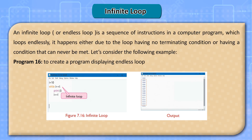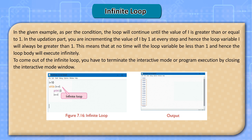Program 15: write a program to display no output when the test condition is false. In the above example, as the initial value of i (10) is greater than 1, the condition returns false, and hence the loop body will not be executed even once — so you get no output. Infinite loop: an infinite loop or endless loop is a sequence of instructions in a computer program which loops endlessly. It happens either due to the loop having no terminating condition or having a condition that can never be met.